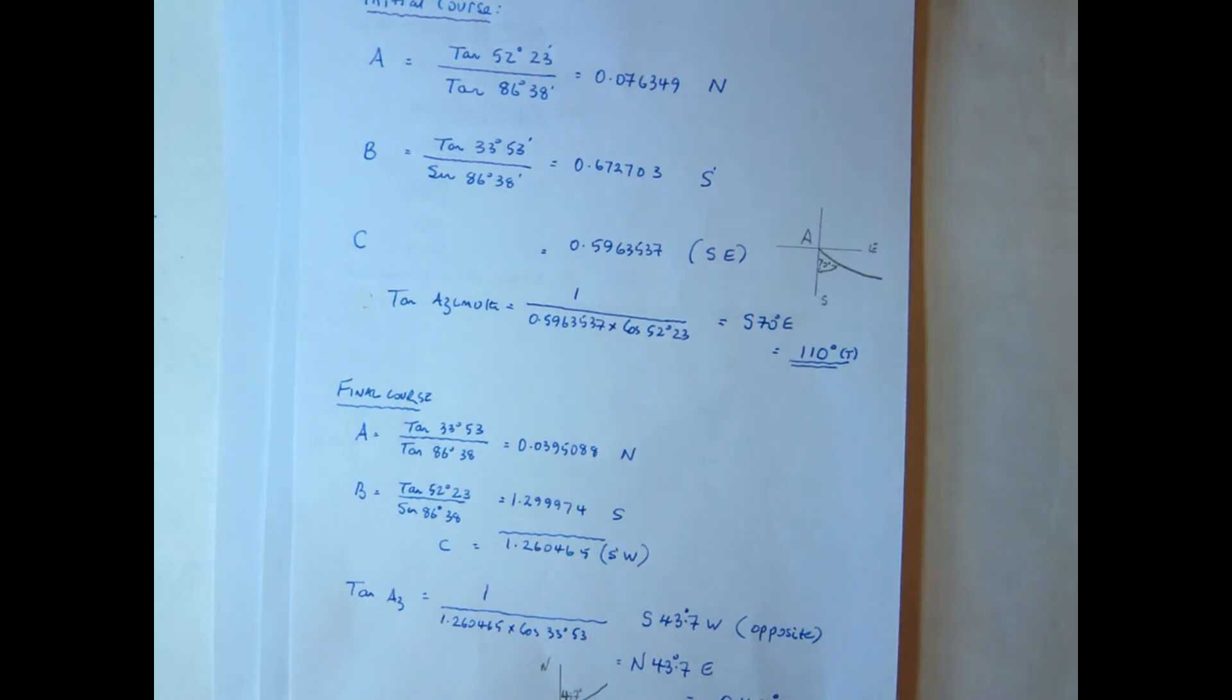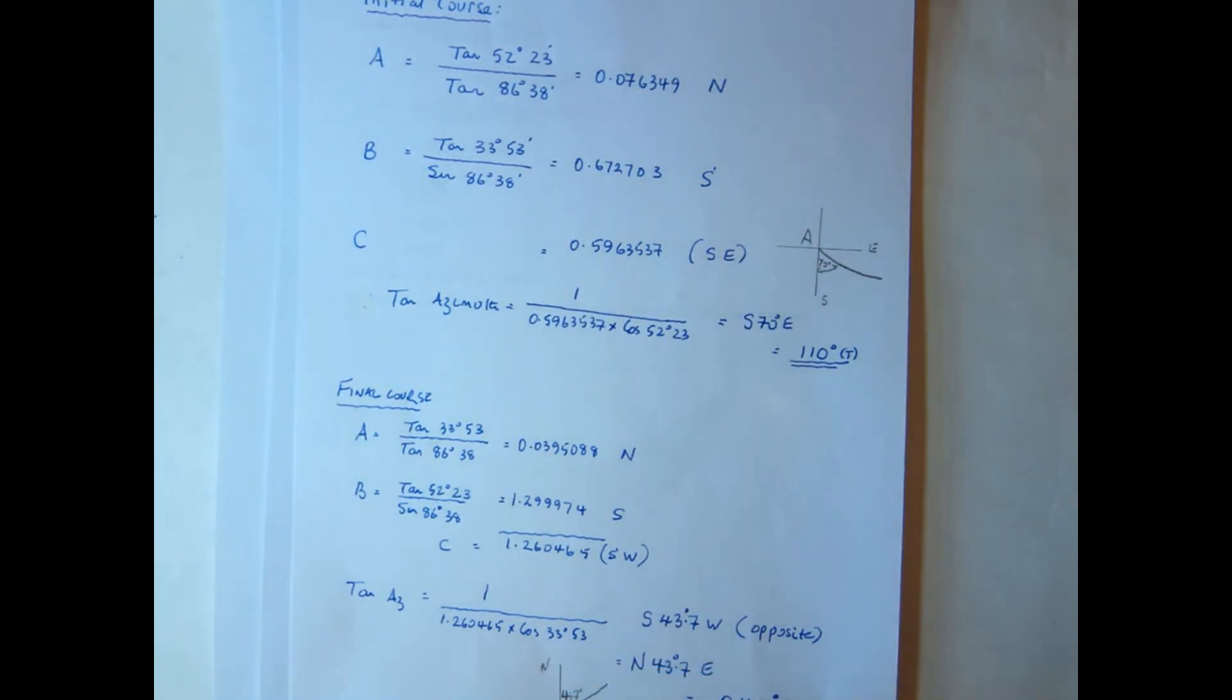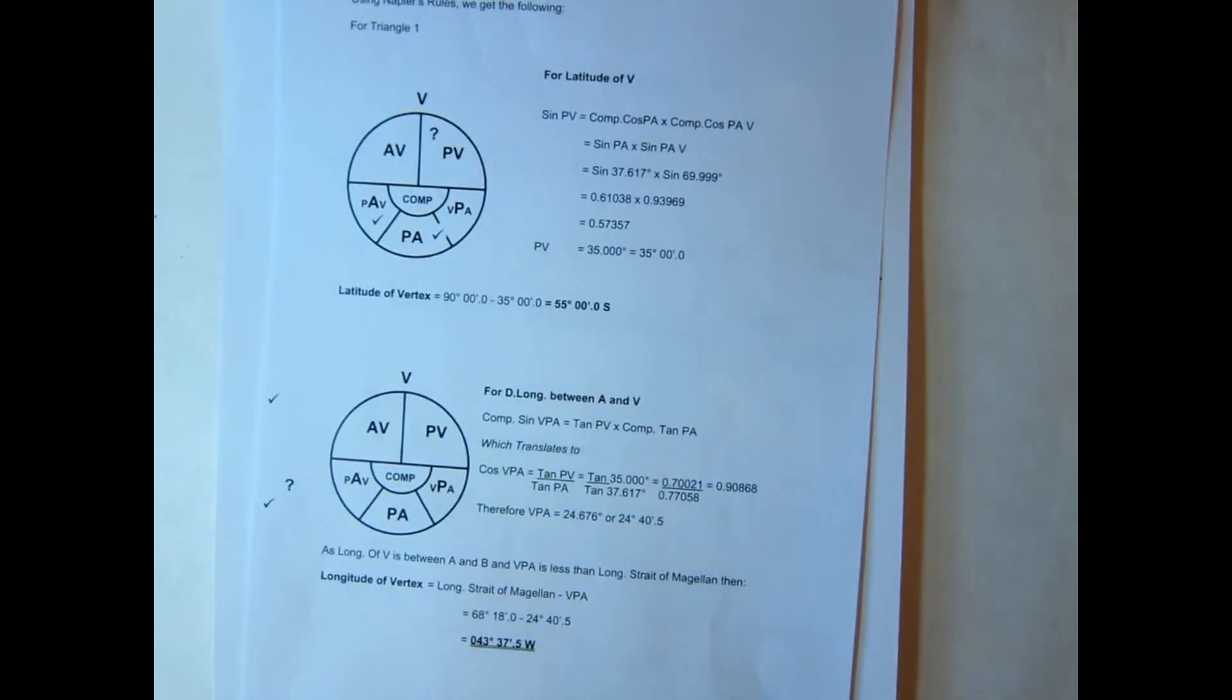So it's 43.7 degrees is the course, so it's northeasterly as we calculated initially. So that's another way you can calculate the courses, and of course with this way you don't need to subtract your latitudes from 90 and you don't need your initial distance to calculate those values.